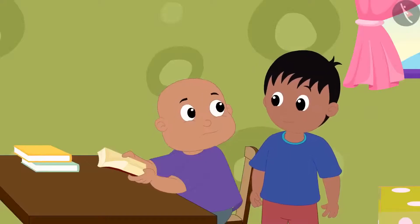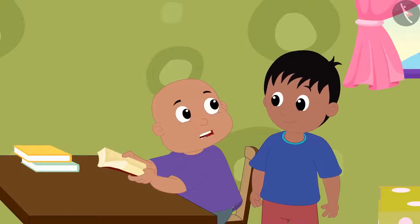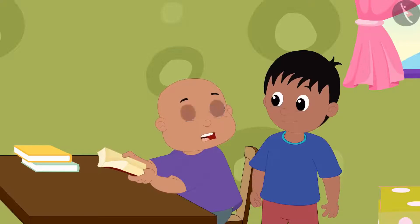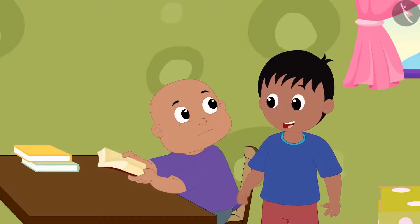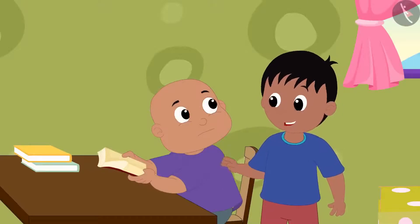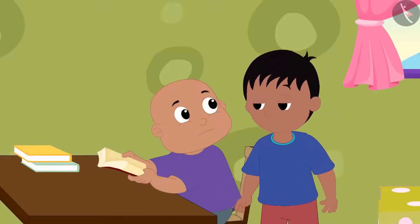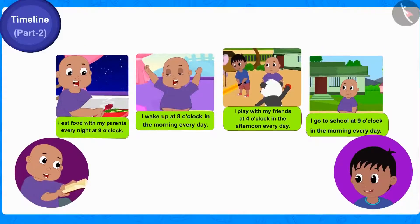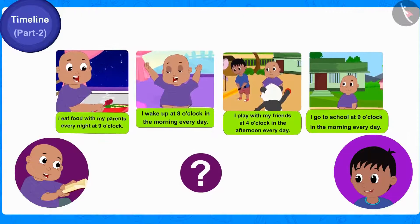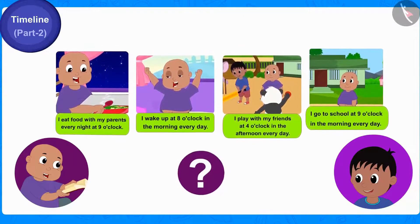Babalu could not understand anything. He said: Raju, I only know how to make a timeline from age. Can you teach me how to make a timeline using time? Raju said: first we will write the very first task in your daily routine on the timeline. Of these 4 tasks, which task do you do first and at what time?